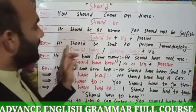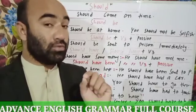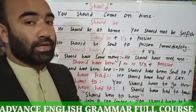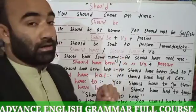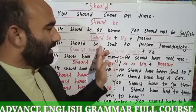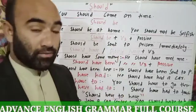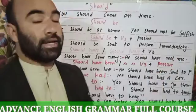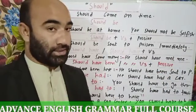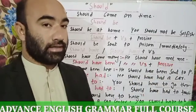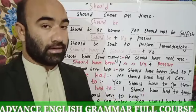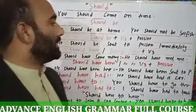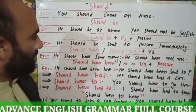In the passive sentence, BE has used as a helping word, not the main verb, because the main verb is already available in the sentence. So there is no need for another verb. We use BE as a helping word and SENT as the main verb here. This is the passive voice sentence: 'He should be sent to prison immediately.' It has two different pronunciations — IMMEDIATELY or IMMEDIATELY. The Indian pronunciation is IMMEDIATELY, but British and American is IMMEDIATELY.